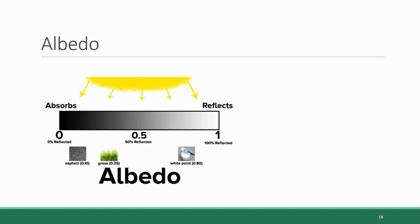Albedo is measured on a scale that ranges from zero to one, where zero represents a surface that absorbs 100 percent of the solar energy and reflects none of it. On the opposite end of the scale, one is a surface that absorbs no light and reflects all of it. So every material can be characterized with a decimal number somewhere between zero and one on that scale.